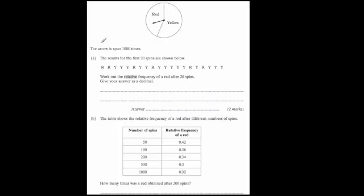Here's another question. Here we've got a spinner, and we've got red and yellow. And the spinner has spun 1,000 times. Here are the results for the first 20 spins. It says, work out the relative frequency of a red after 20 spins, given your number as a decimal. So what we need to do is see how many reds there are. So there's one, two, three, four, five, six. So there's six reds out of 20 spins. So the relative frequency as a fraction is 6/20, because it's 6 out of 20. Or 6 is the number of successes, and 20 is the number of trials. And then we just need to write it as a decimal. So just cancelling it down would give you 3/10. And 3/10 is 0.3.